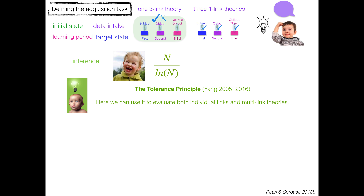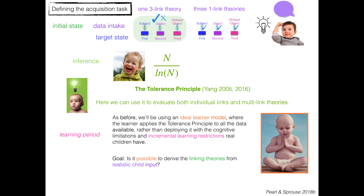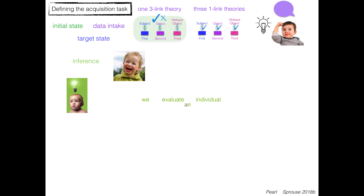We can use the tolerance principle to evaluate both individual links and multi-link theories. We're using an ideal learner model where the learner applies the tolerance principle to all the data available, rather than deploying it with the cognitive limitations and incremental learning restrictions that real children have — though that's something that can be relaxed in future studies. Here we're just trying to see whether it's possible to derive the linking theories — one three-link theory or three one-link theories — from realistic child input.